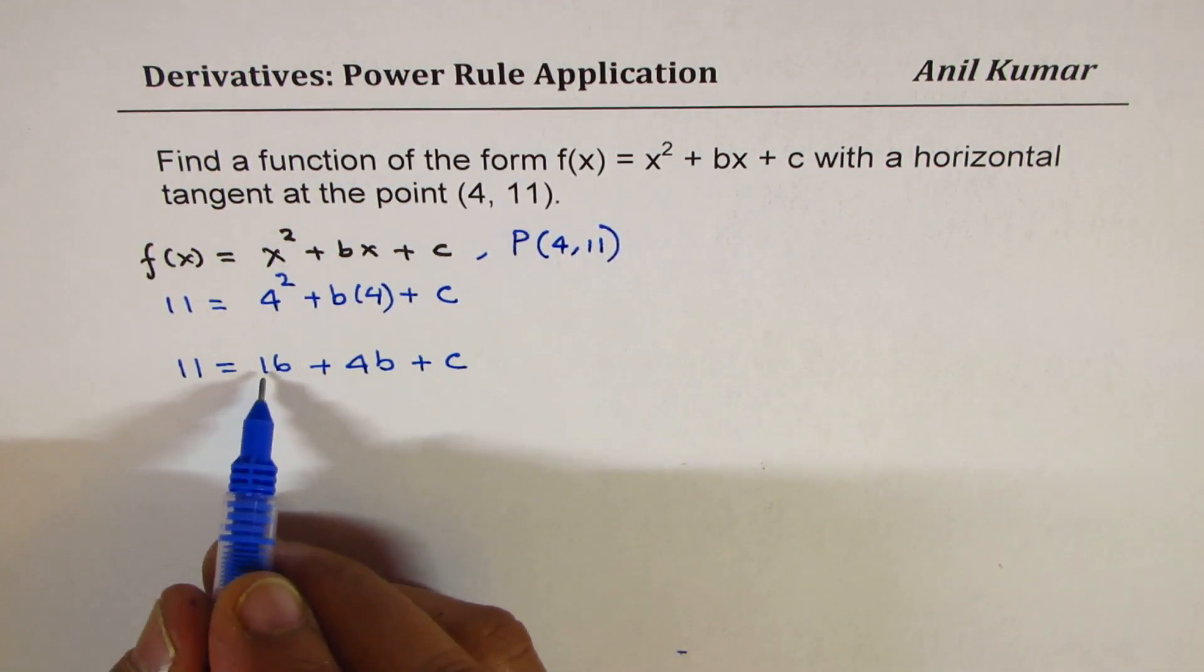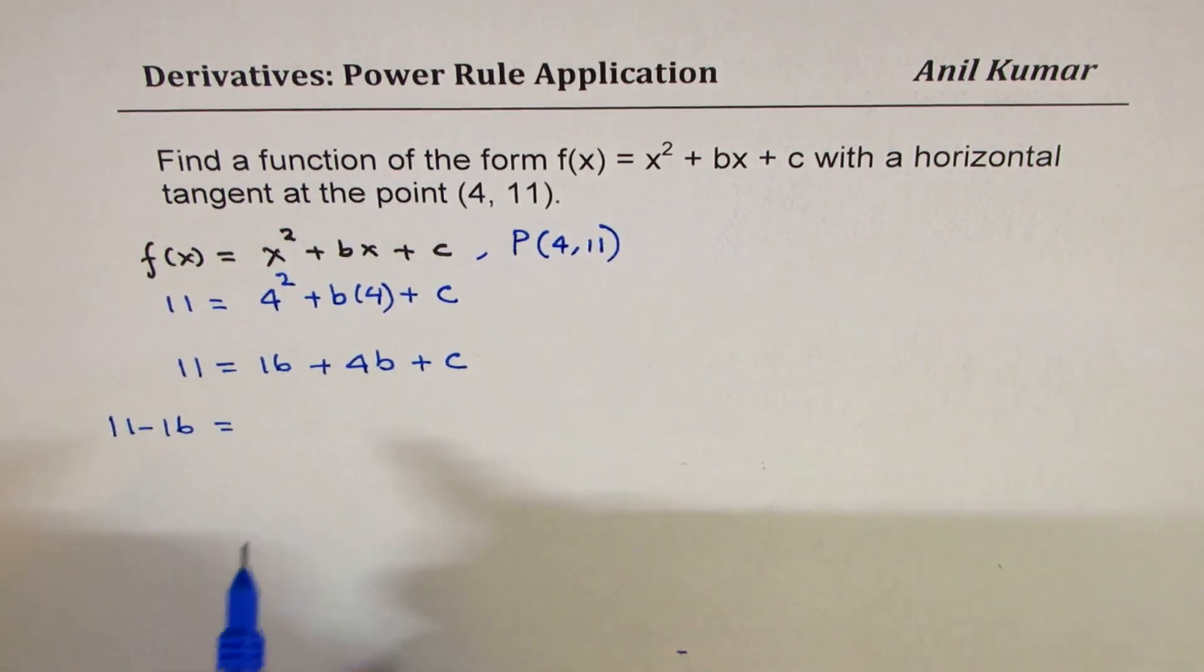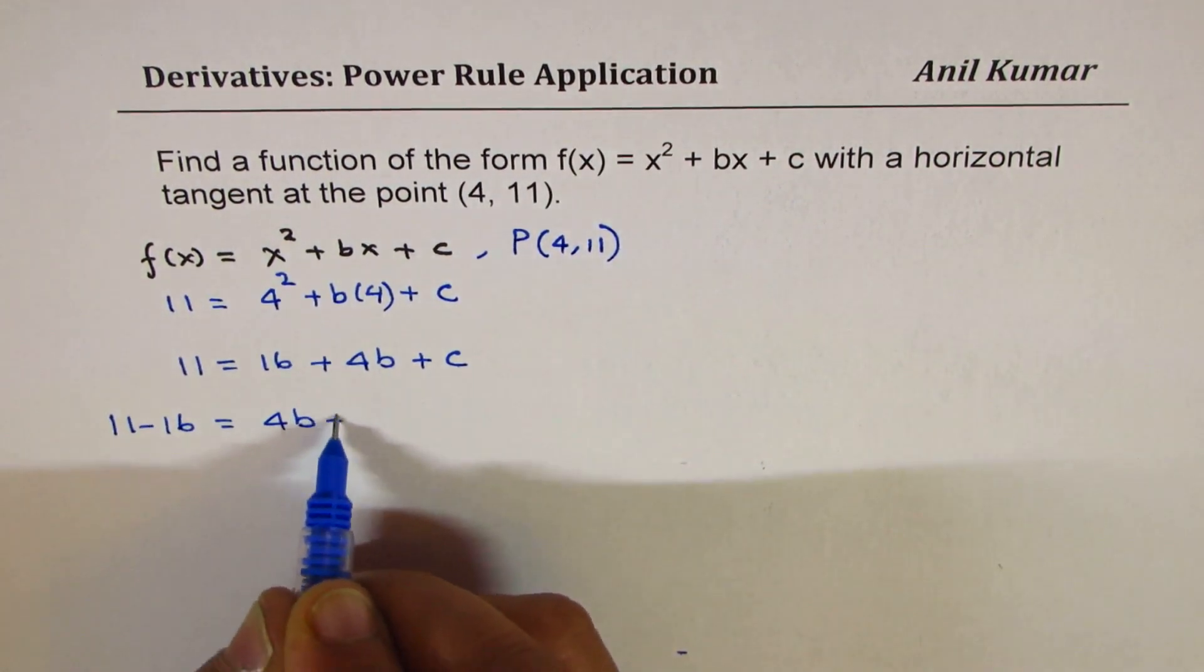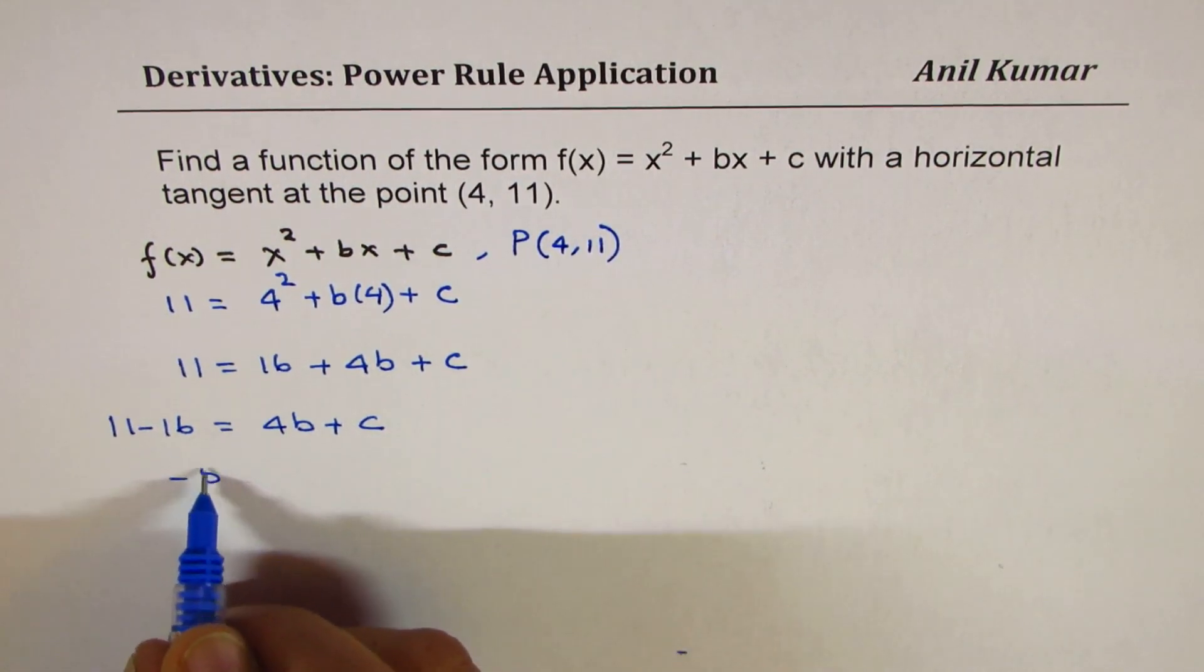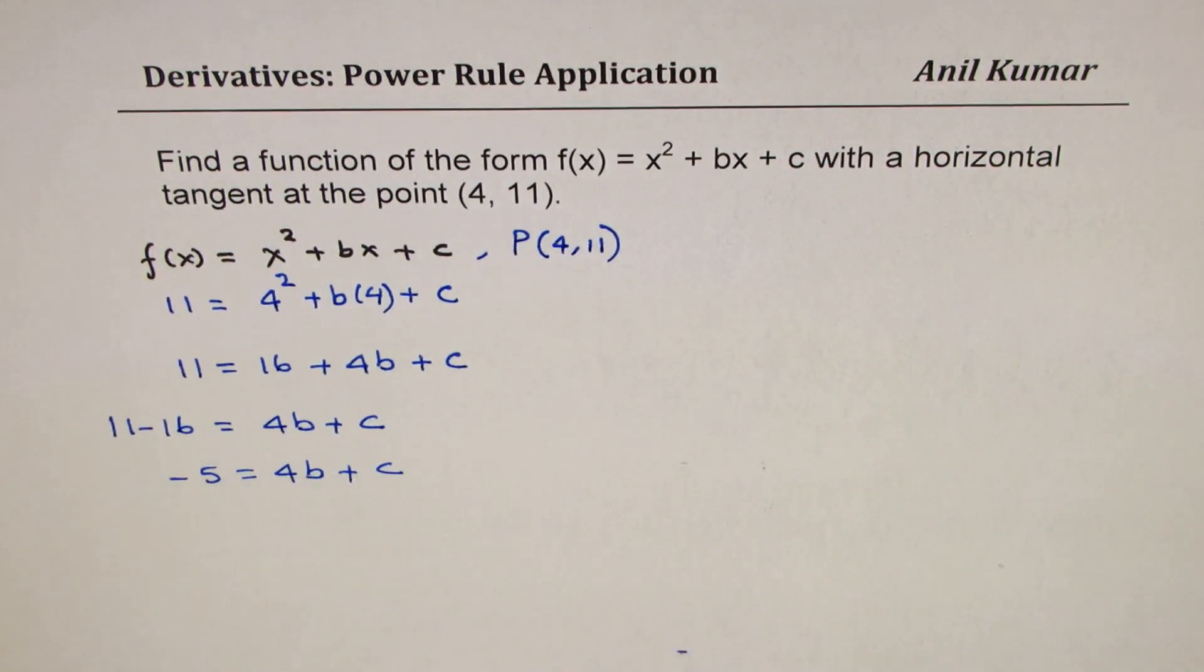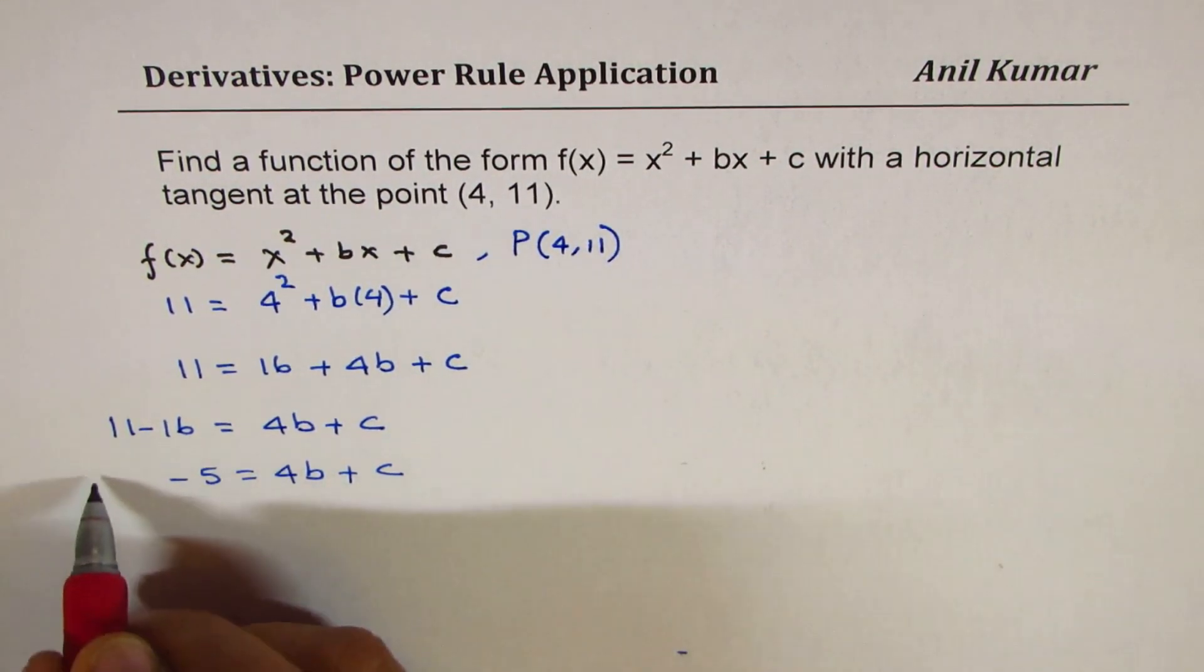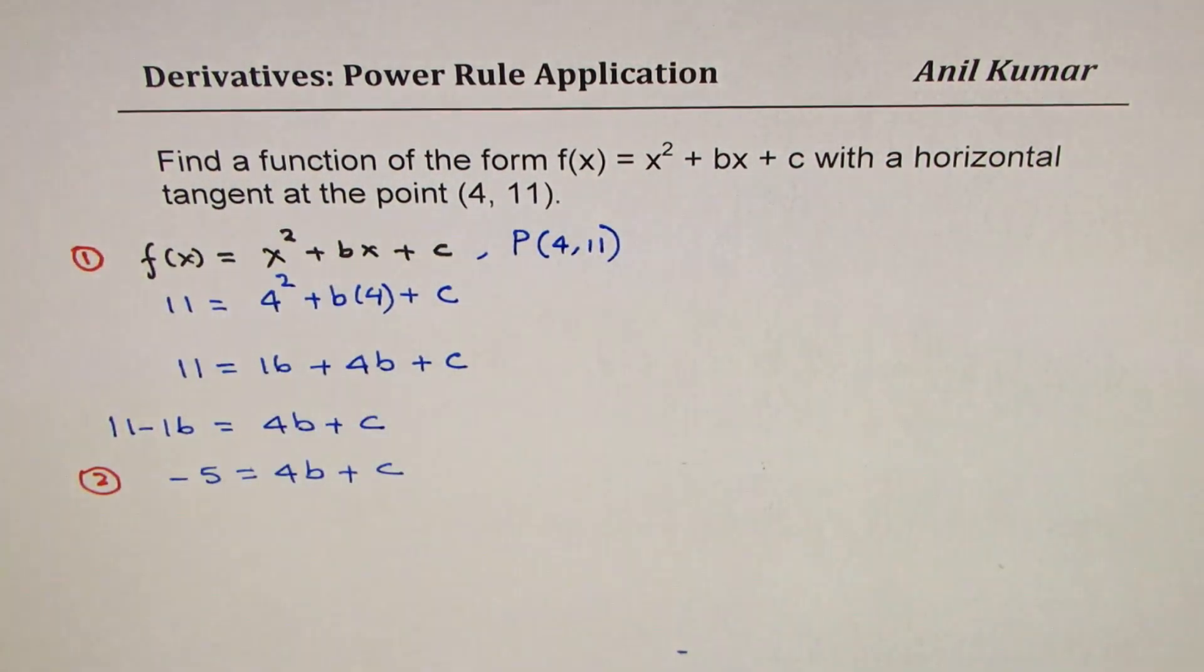11 - 16 = 4b + c, which gives -5 = 4b + c. So we will call this as our equation number 2, this being our original equation given to us.